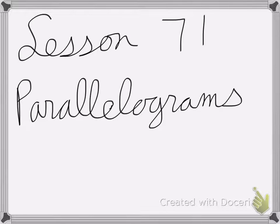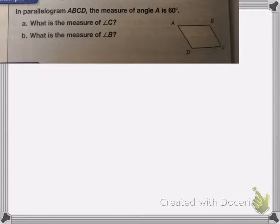All right, so Lesson 71 is on parallelograms. Here we have the parallelogram ABCD, and we know that angle A is 60 degrees.